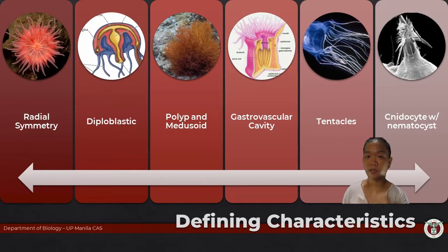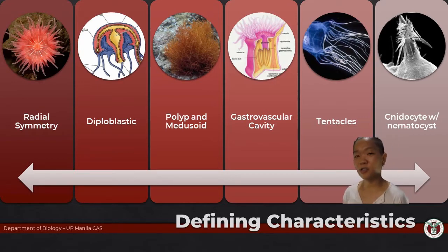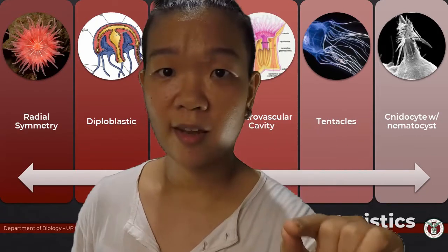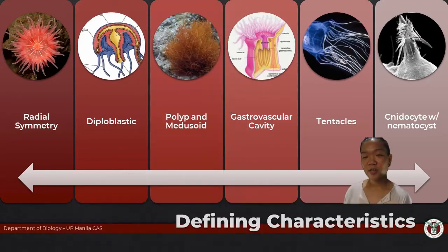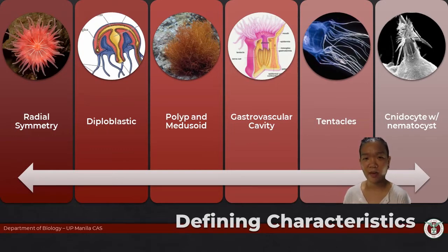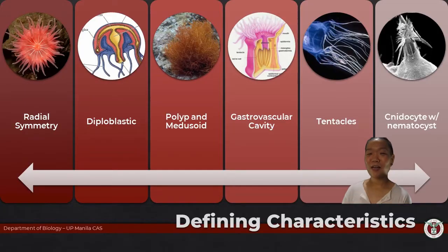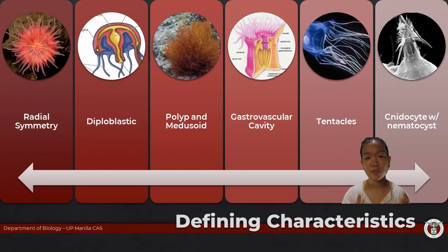The gastrovascular cavity doesn't help with speed, because what is one advantage of having a separate mouth and a separate anus? You can eat and excrete at the same time. With a single shared hole, you can't have both processes simultaneously — you eat, digest, then expel waste through the same opening. That means nutrients are distributed to the body more slowly, making movement much slower overall.